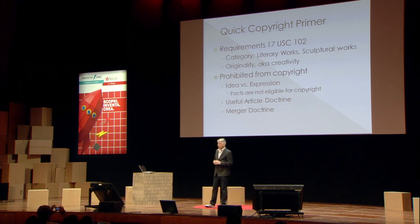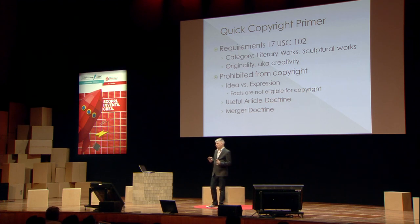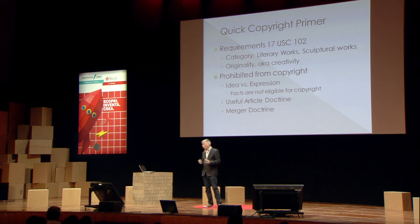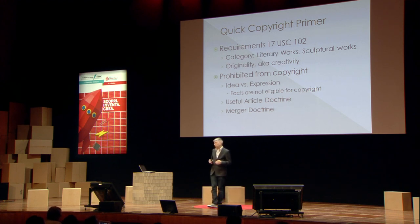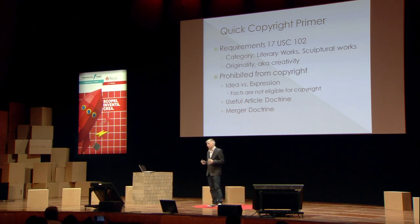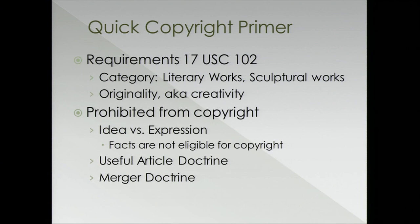A quick primer on the copyright issues we're looking at. First, the Copyright Act in the US enumerates certain categories — depending on which category you fall into, you get certain exclusive rights. What might open source hardware fall into? Literary works, which includes computer programs, is pretty straightforward. Could a PC board be a sculptural work? That's a category to consider. Open source hardware is not a building, so architectural works aren't useful to look into. There also has to be some originality — a very low bar, but it requires some human creativity.